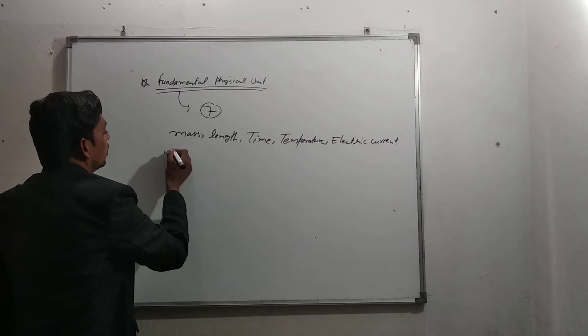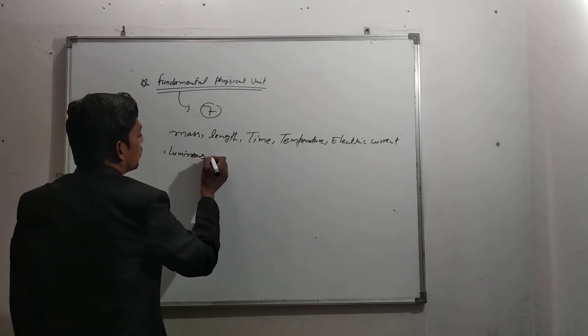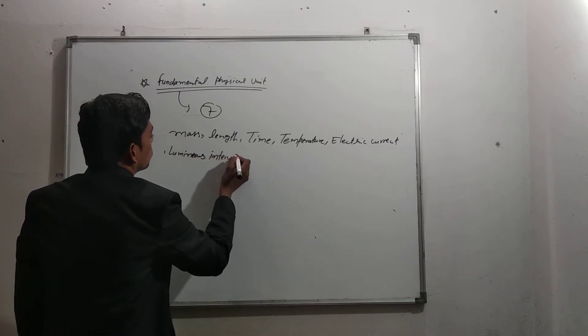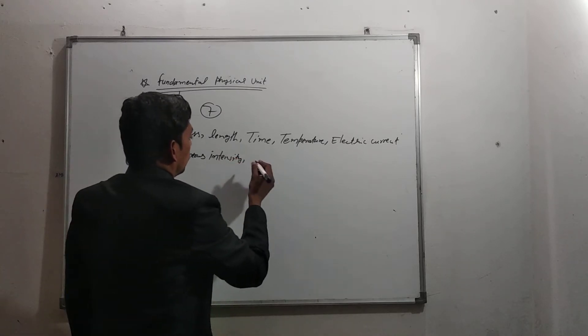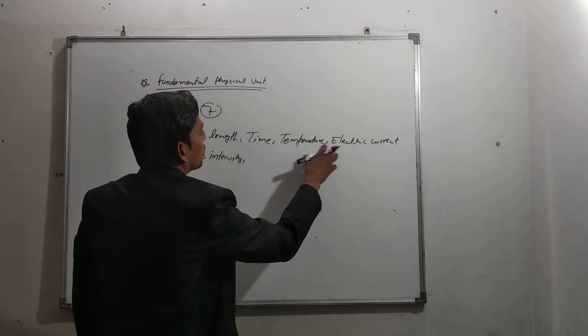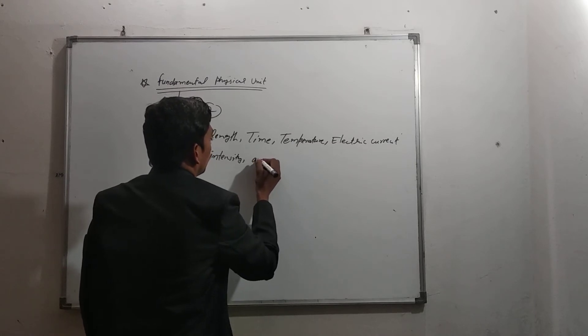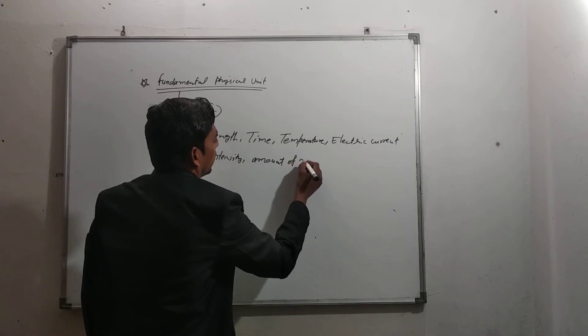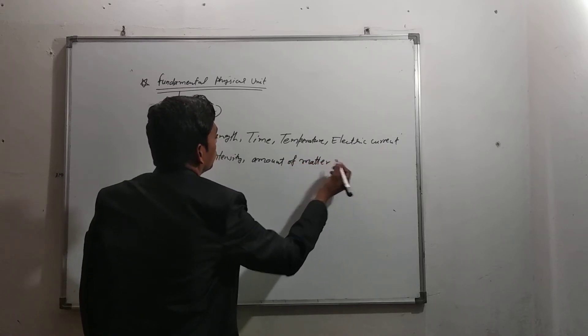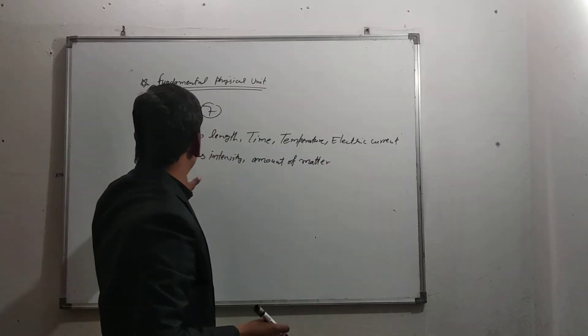Luminous intensity, or mass, length, time, temperature, electric current, luminous intensity, or amount of metal. One, two, three, four, five, six, seven.